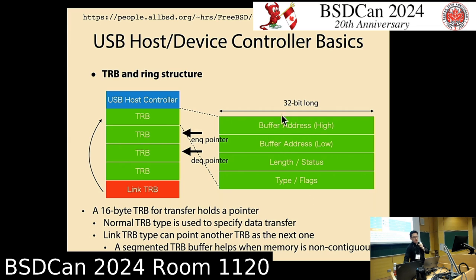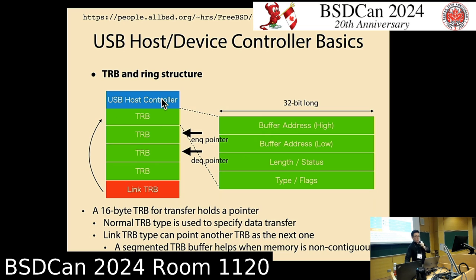The internal layout of the 16-byte block has the first two fields for the buffer address (64-bit) and the length field, with the type field at the tail. A single TRB points to the data to be transferred. The USB controller reads from the top of the ring buffer and processes the data transfer sequentially from top to bottom.